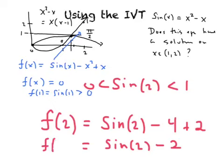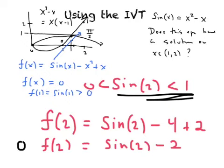Minus 4 plus 2, this equals sine of 2 minus 2. That's f of 2, and I think you would agree with me because sine of 2 is less than 1, 1 minus 2 is going to be negative, so we know that f of 2 is less than 0. It's negative.